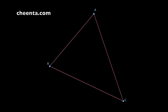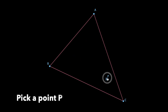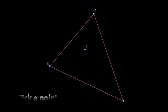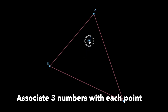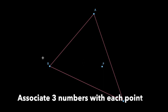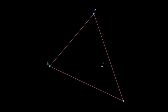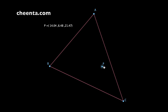So let's pick a point — let's suppose it's P. We can move this point P all around, and we want to associate three numbers with the position of point P with respect to this triangle. So something like this happens: for this particular position of point P, we have three numbers: 14.04, 6.48, and 21.47.